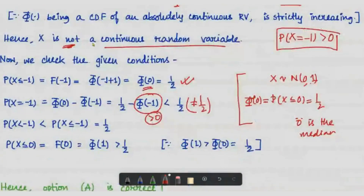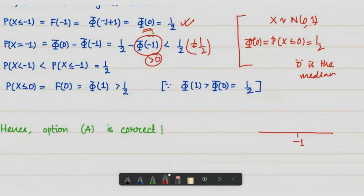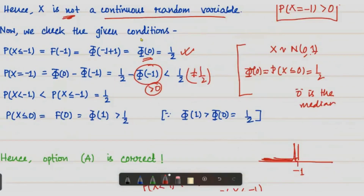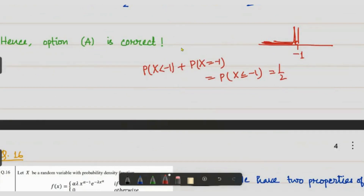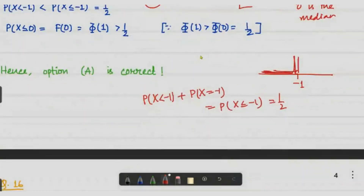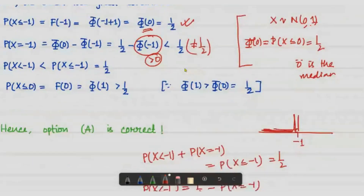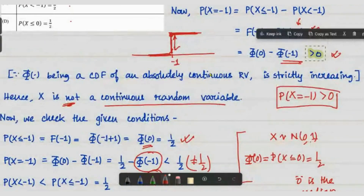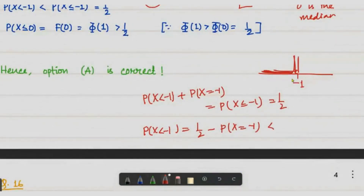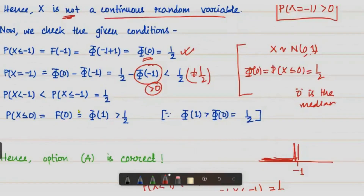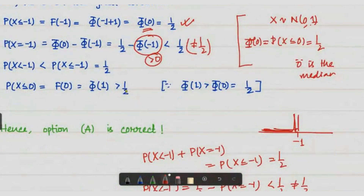Now we check P(X < -1). Since P(X < -1) plus P(X = -1) equals P(X ≤ -1) = 1/2, we get P(X < -1) = 1/2 minus P(X = -1). Since P(X = -1) is a positive quantity, P(X < -1) is strictly less than one-half, and hence not equal to one-half.